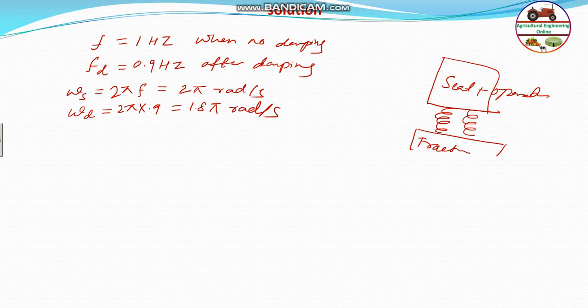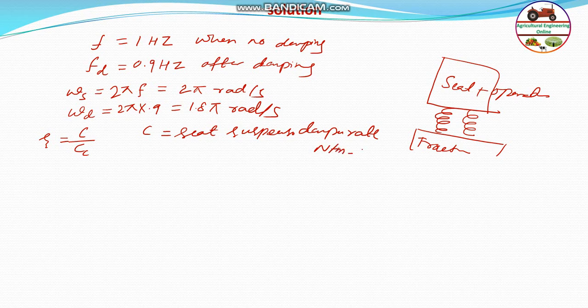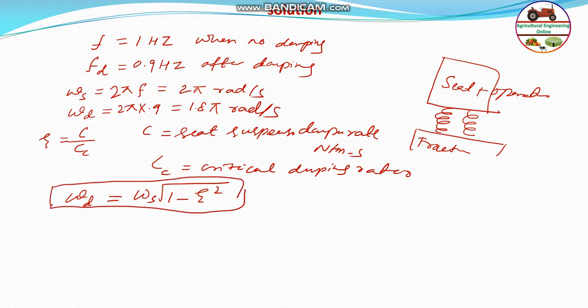Once you know this, there is a formula to calculate the damping ratio. The damping factor ζ equals c by cc, where c is the seat suspension damping rate and cc is the critical damping rate. In this case, these are not given, but we can calculate using the formula: ωd equals ωn times square root of 1 minus ζ squared. This is the formula to use to easily calculate the damping factor.